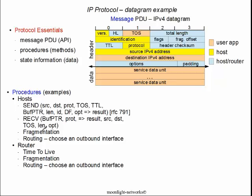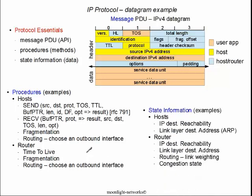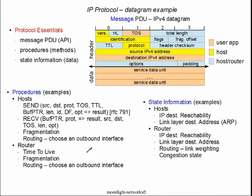Other procedures include fragmentation, which we've already discussed — it can occur in the originating host — and the assembly of fragmented segments at the terminating host when necessary. Intervening routers do not invoke fragmentation assembly; they can break packets apart but not put them back together. Then there's routing, which is the procedure that selects an outbound interface — we'll get into that in detail in later sections. As for state information, this includes router destination, which addresses are reachable, layer 2 addresses, and similar data. There are also upper layer protocols related to routing and congestion that we'll get into.